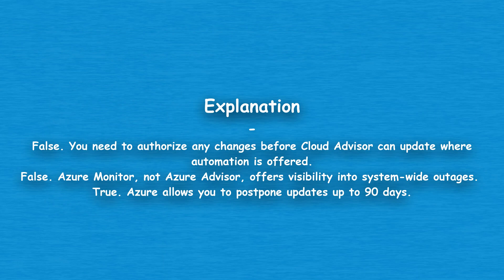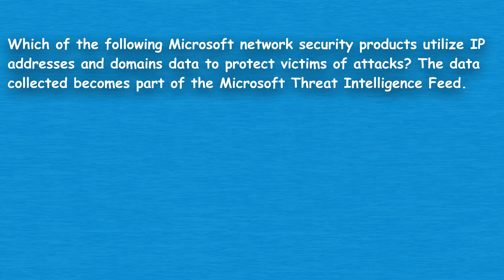False — you need to authorize any changes before Cloud Advisor can update where automation is offered. False — Azure Monitor, not Azure Advisor, offers visibility into system-wide outages. True — Azure allows you to postpone updates up to 90 days.